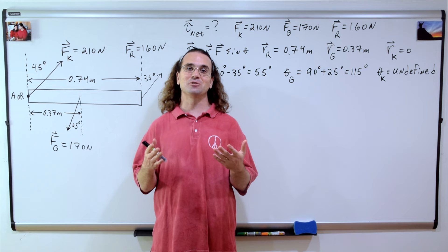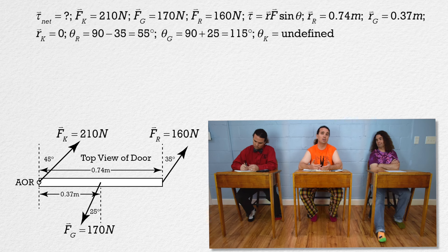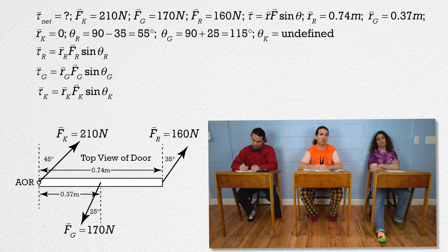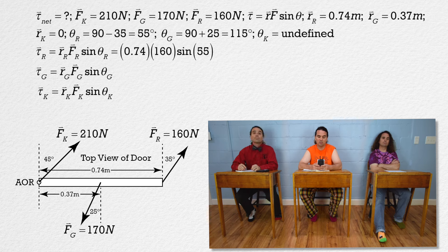Bobby, please solve for the magnitudes of all three torques. We already have the equation for torque, so we just substitute in the variables for each person's torque. Ryan's torque equals 0.74 times 160 times the sine of 55, which is 96.9876 newton meters.